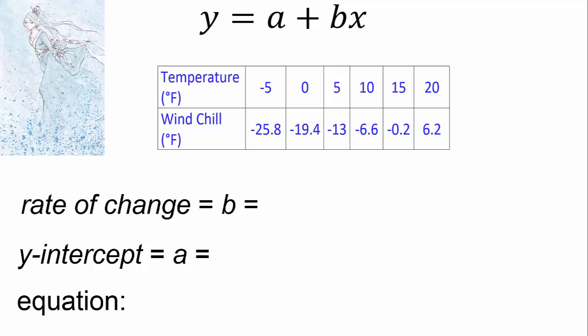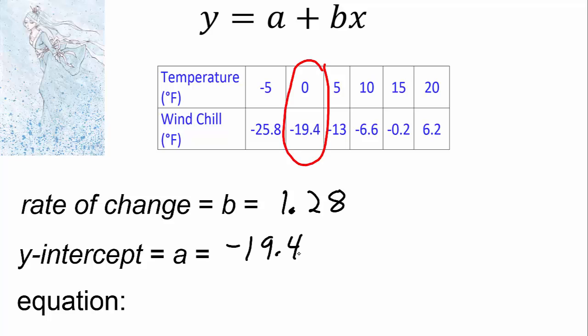Using what we know about the rate of change, let's figure out an equation for the windchill problem. We already calculated that the rate of change for the windchill problem is 1.28. We see from the table that the y-intercept is negative 19.4. So our equation for the windchill problem is y equals negative 19.4 plus 1.28 times x.